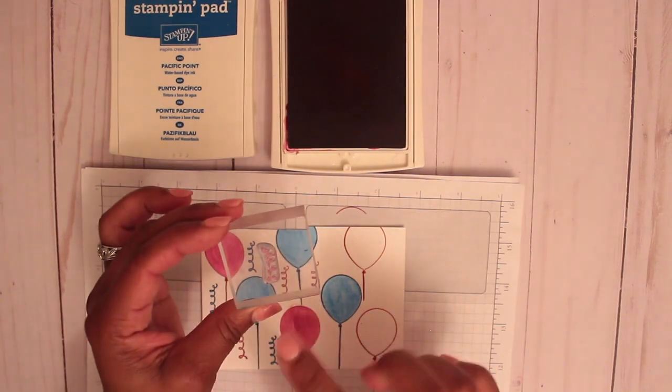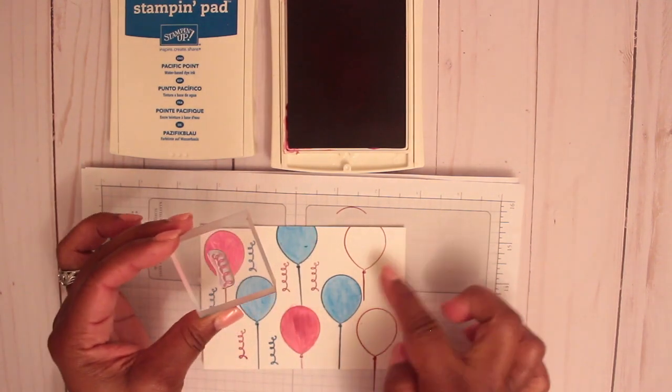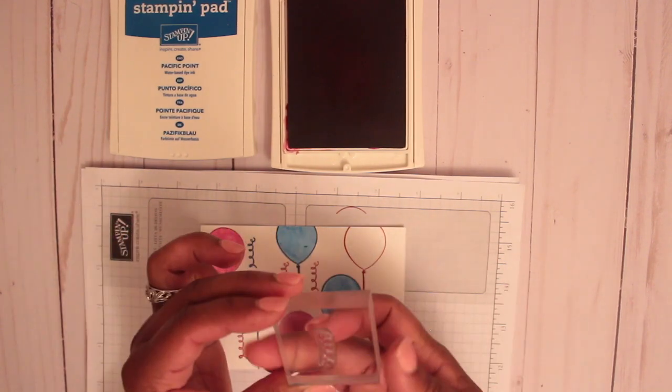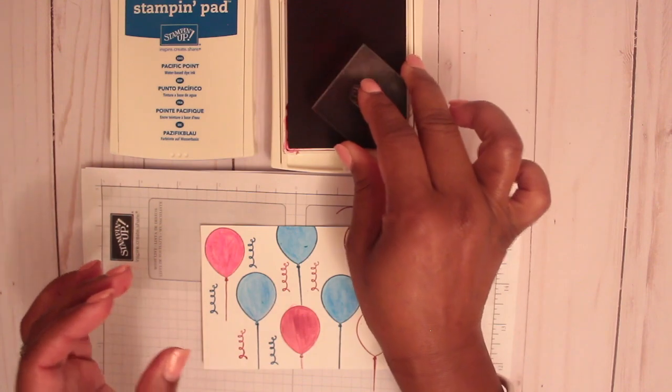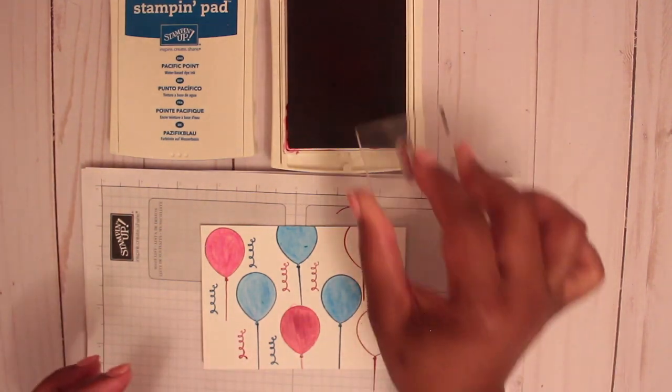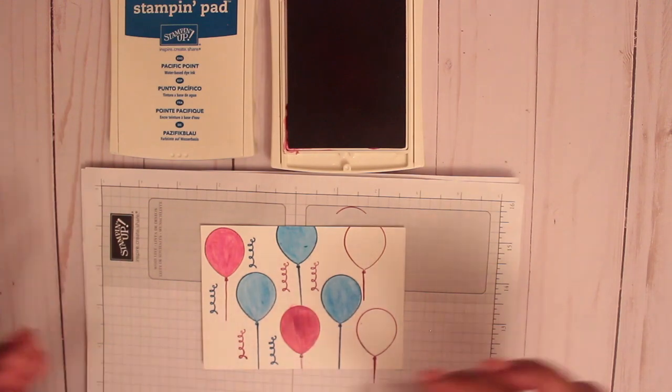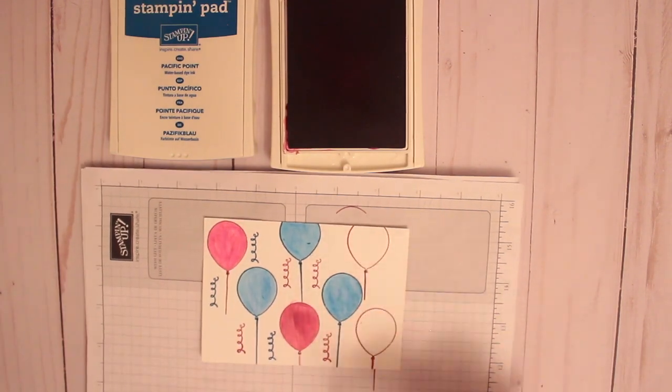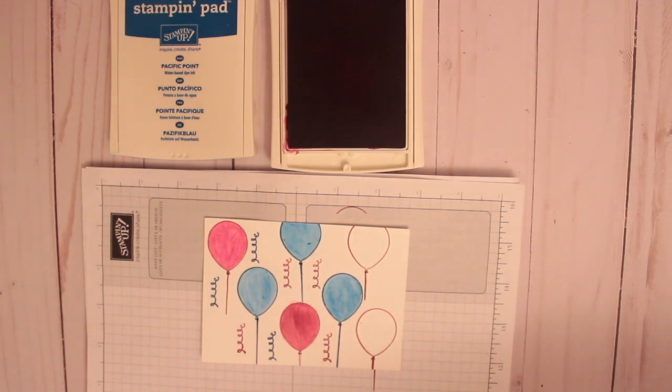They also have these little squiggly things that look like confetti or I guess it could be like a squiggly line coming off of the balloon as well. I'm going to go ahead and get some of the Pacific Point, some of the blue in there.